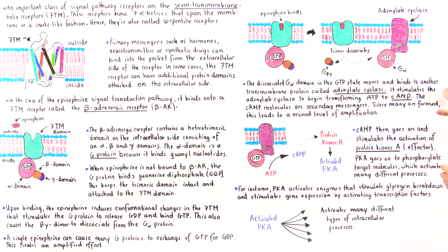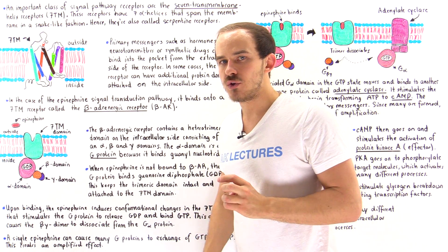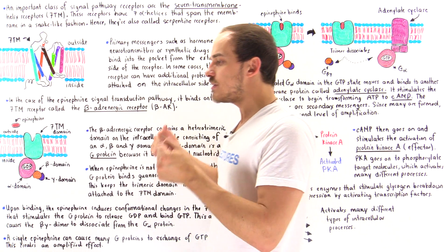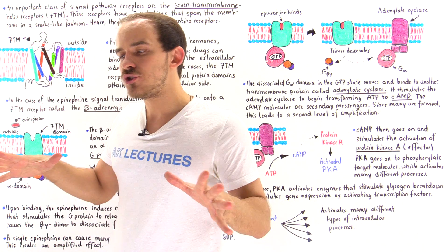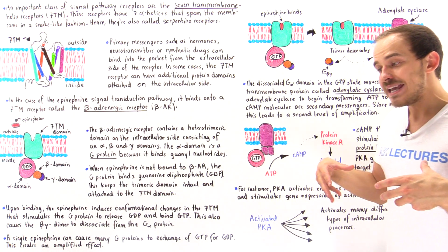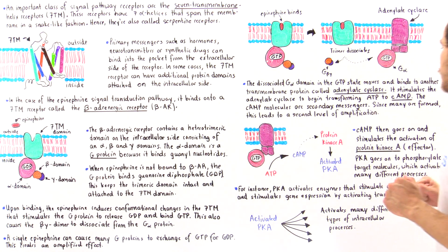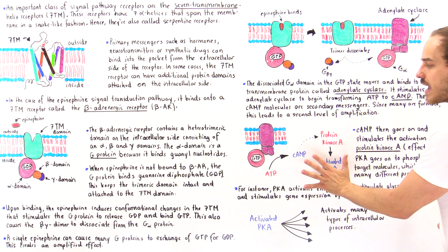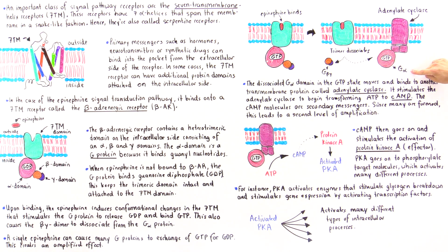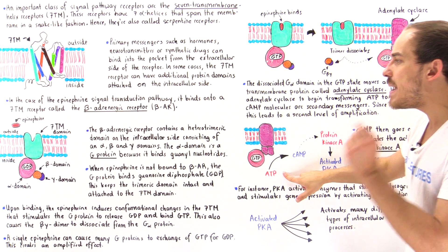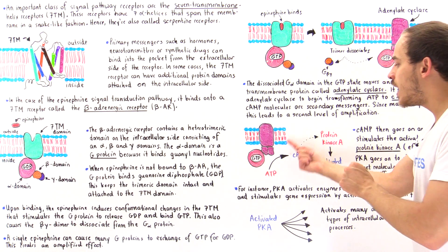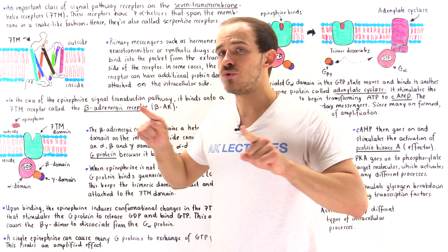These cyclic AMP molecules are secondary messengers — intracellular molecules found inside the cell that can diffuse into different regions and organelles and stimulate many different types of processes. This is the second level of amplification: a single G alpha protein binds a single adenylate cyclase, and that single cyclase enzyme produces many cAMP molecules, which then diffuse into different regions of the cell.